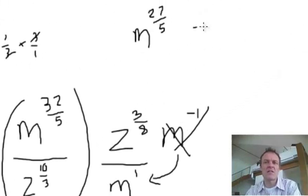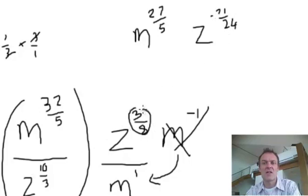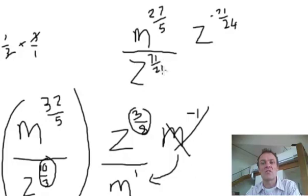So, right now, I'm saying that this is z to the negative 71 over 24. Of course, I subtracted, OK? I did 3 eighths, take away 10 thirds, all right? Of course, it's a division. And I got negative 71 over 24. Well, here's the final answer. If I put it on the bottom, it's positive 71 twenty-fourths.